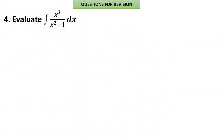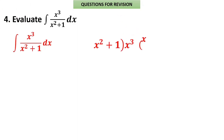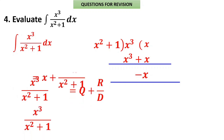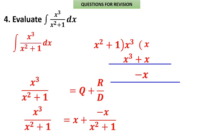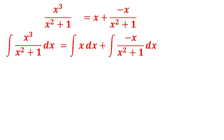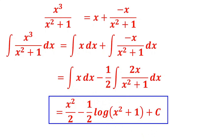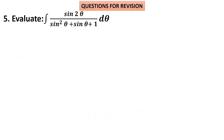Problem 4: ∫x³/(x²+1)dx. Numerator degree 3, denominator degree 2 — improper fraction, must divide. Dividing: multiply by x to get x³+x, remainder is −x. So x³/(x²+1) = x + (−x)/(x²+1). Split: ∫x dx + ∫(−x)/(x²+1)dx = x²/2 + second integral. For the second, the numerator can be made the differentiation of the denominator (d/dx(x²+1)=2x), so multiply/divide by 2: result is −(1/2)·log(x²+1).